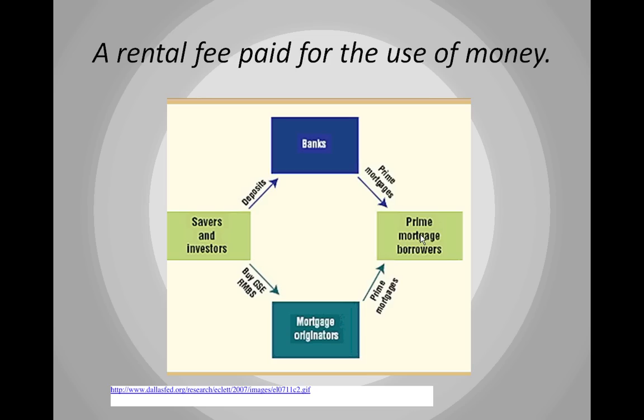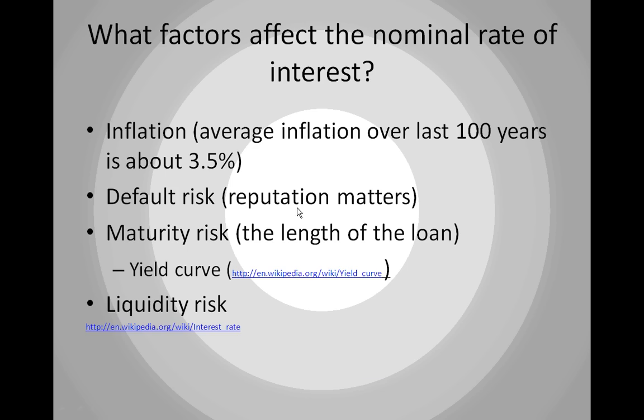The graphic shown comes from the Dallas Federal Reserve website. So what factors affect the nominal rate of interest? The nominal rate of interest is the rate of interest you see in the market. We compare different rates that are advertised — you might see terms like APR, annual percentage rate, which is a government-defined way of calculating interest. The nominal rate of interest is essentially the APR, the rate charged in the market.